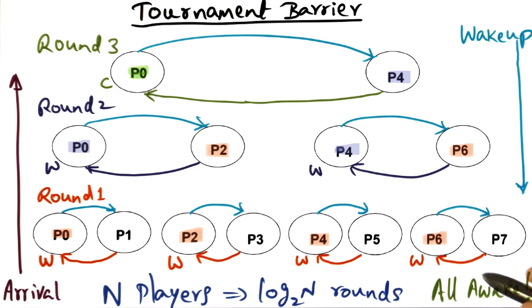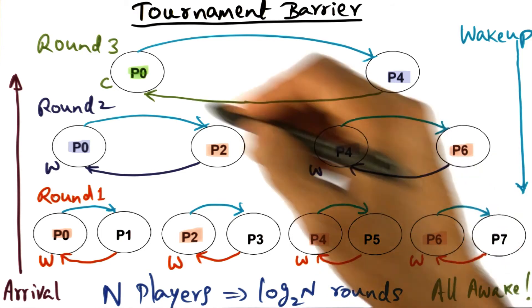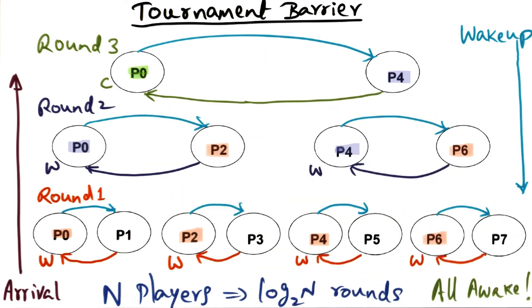And once again, in order to make sure that there is sense reversal, everybody knows that this barrier is done, and they're going to go to the next phase of the computation, where they'll wait on the different sense of the barrier. So that's the tournament barrier algorithm.